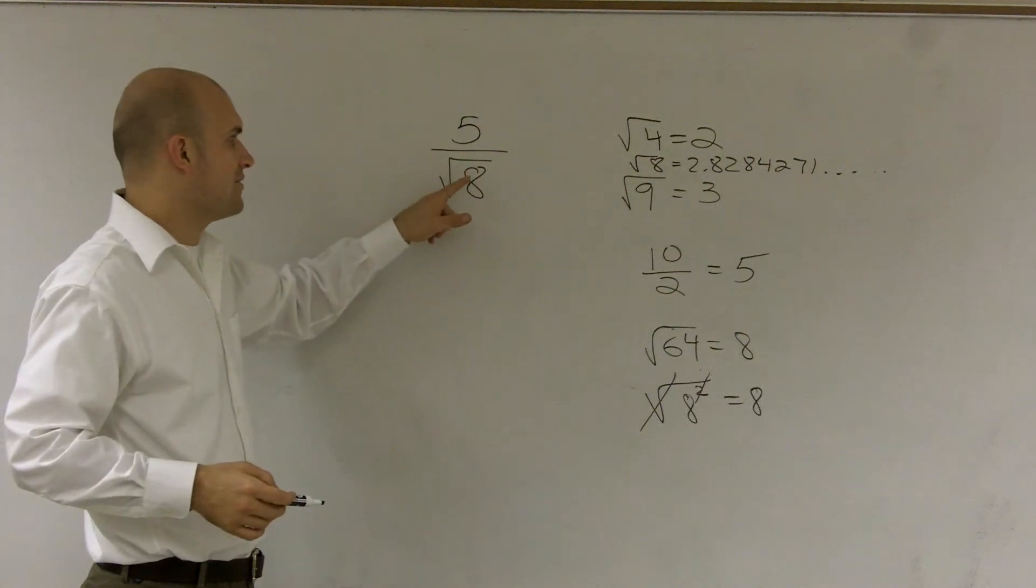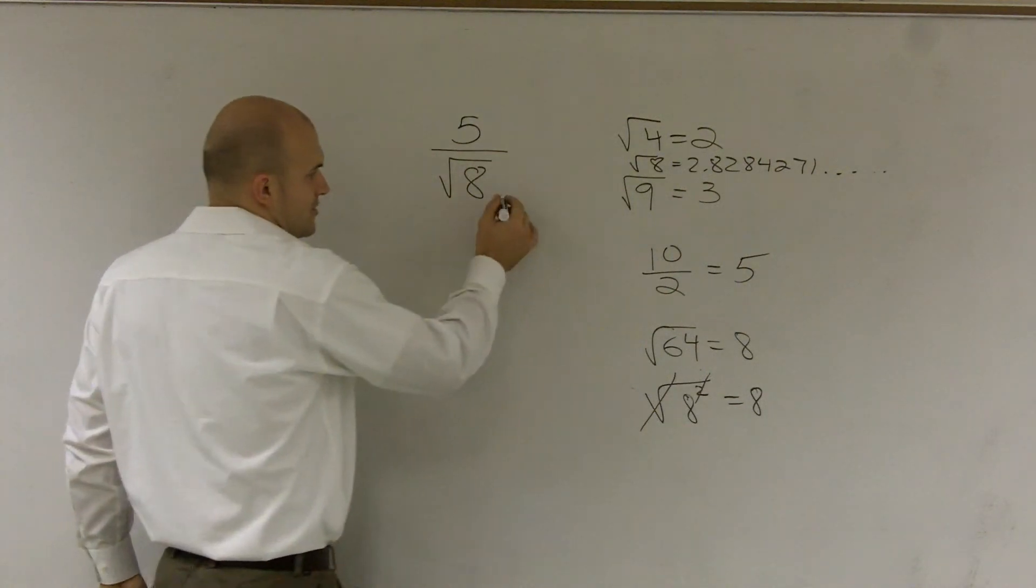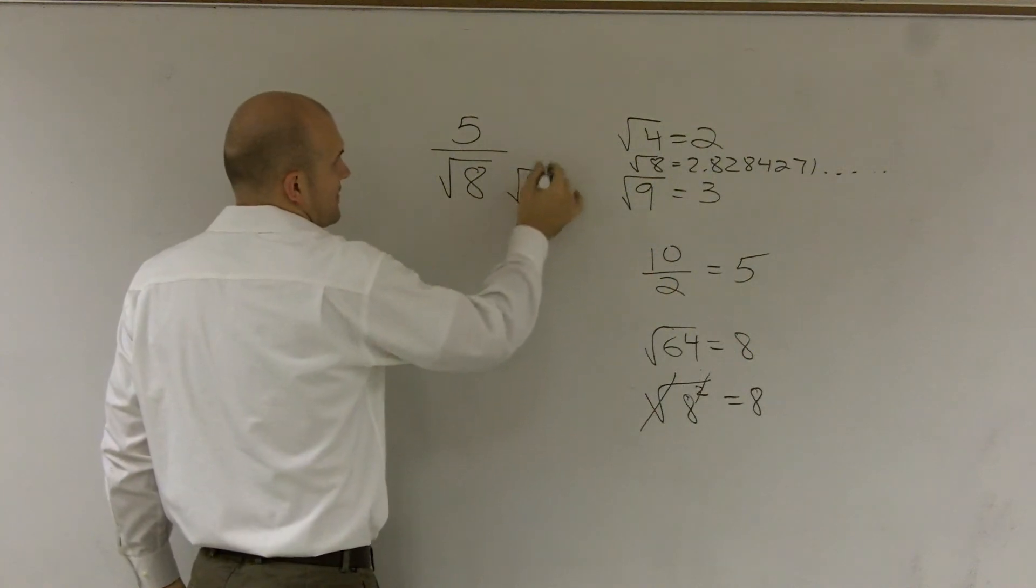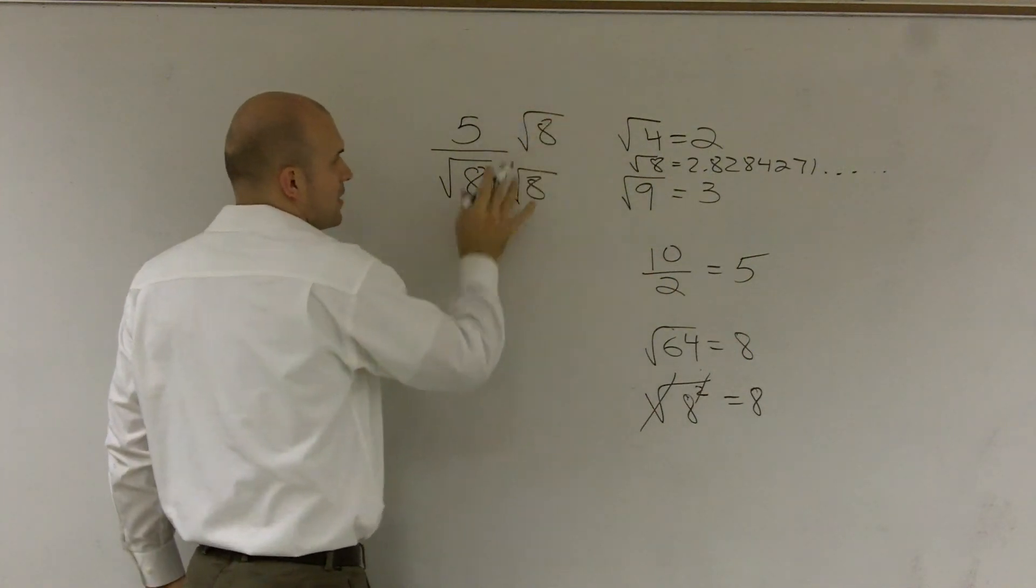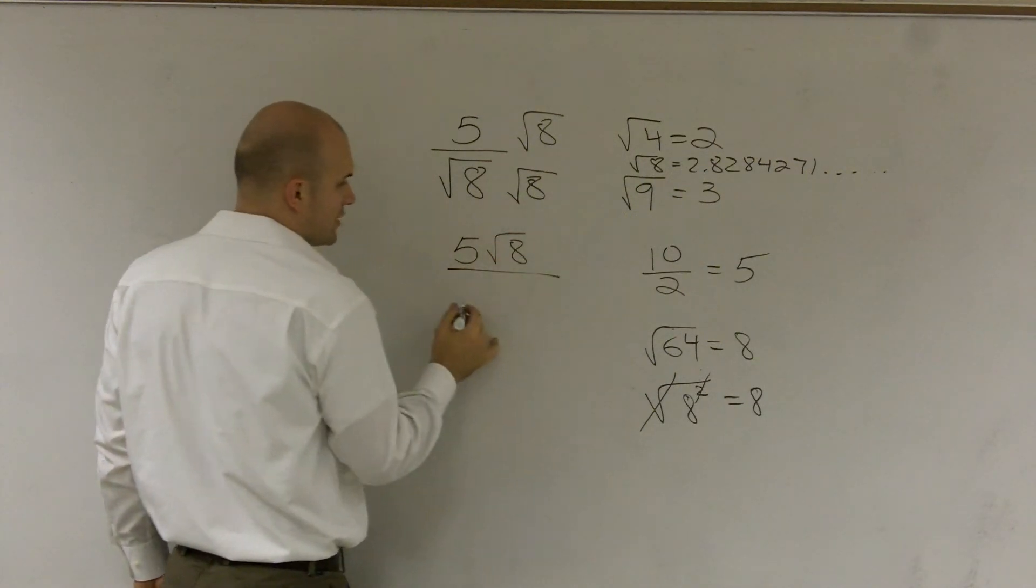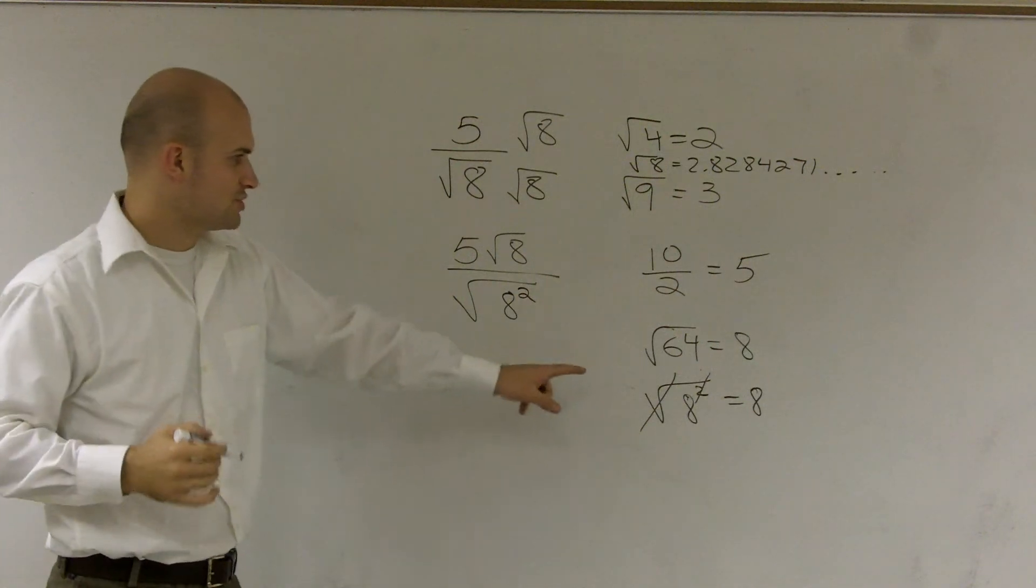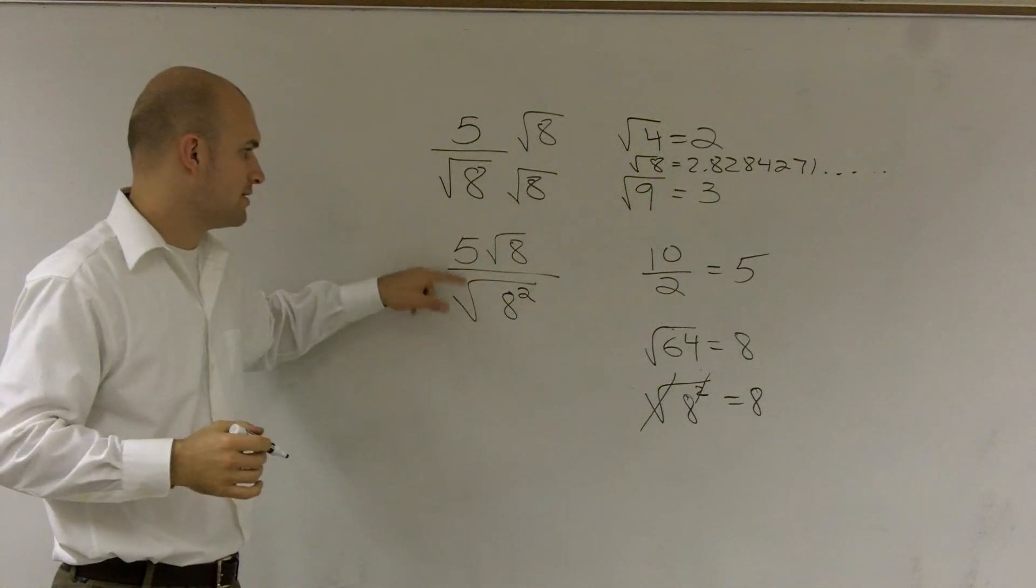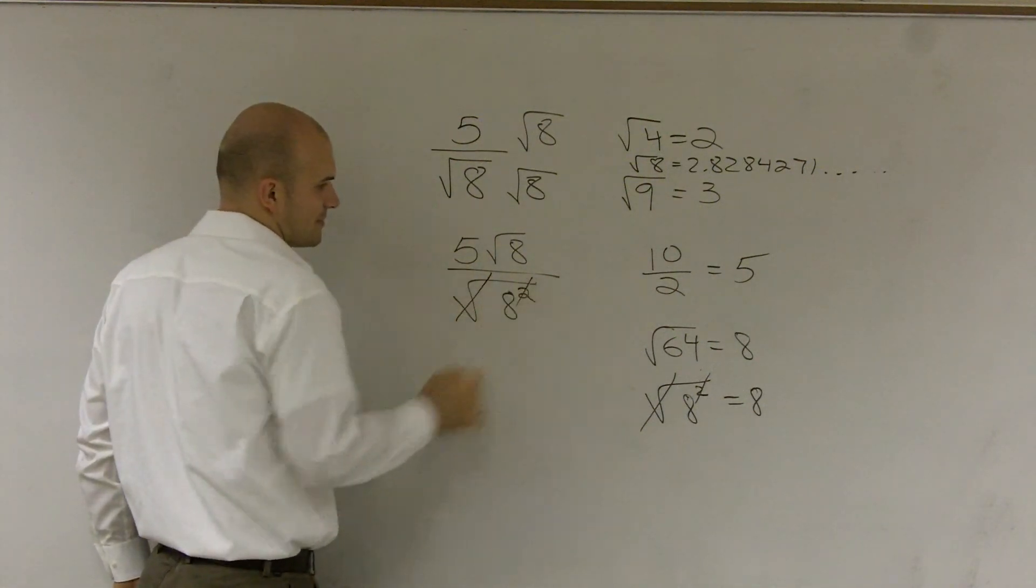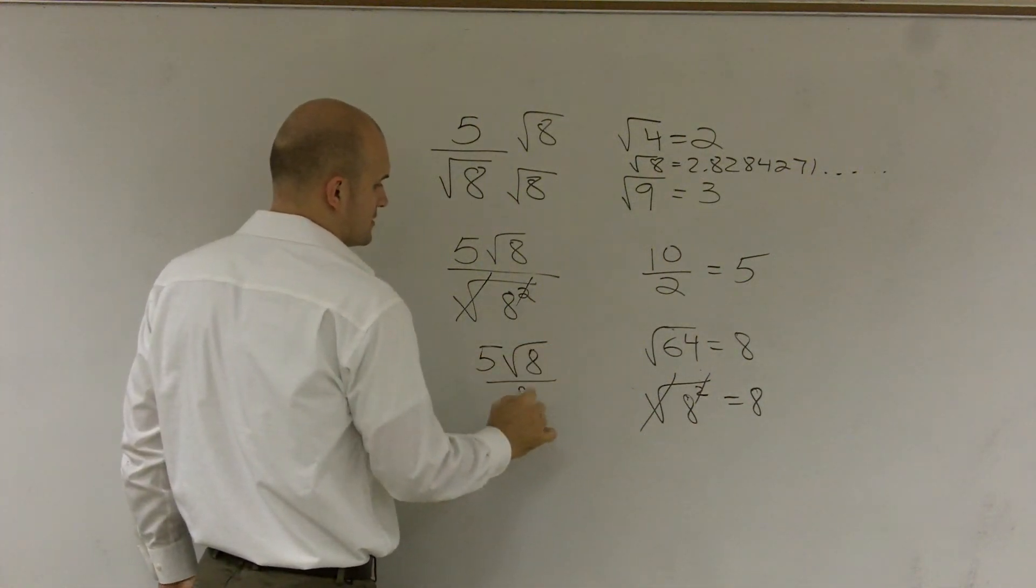So what I can do is, how can I get this to be the square root of 8 squared? Well, what I can do is if I multiply this by square root of 8 on the top and the bottom, what I'll now obtain is 5 times square root of 8 all over the square root of 8 squared. And I just previously showed you that the square root of 8 squared cancels out to leave us 5 times the square root of 8 divided by 8.